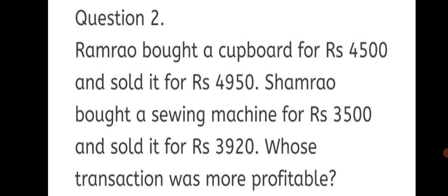Question number 2. Ram Rao bought a cupboard for Rs. 4,500 and sold it for Rs. 4,950. Similarly, Sham Rao bought a sewing machine for Rs. 3,500 and sold it for Rs. 3,920. Whose transaction was more profitable? Just by finding the profit we will not be able to compare, so we have to find the percentage of profit for each and compare.